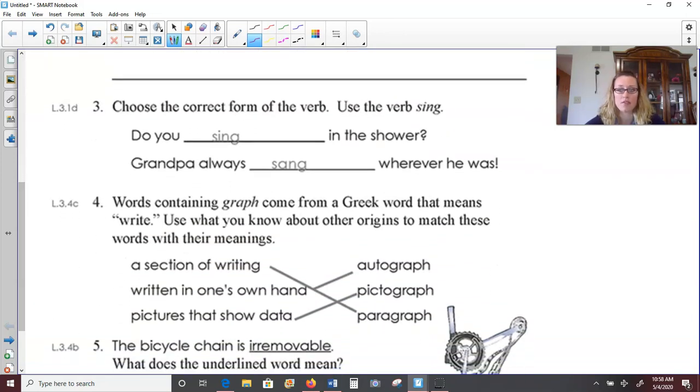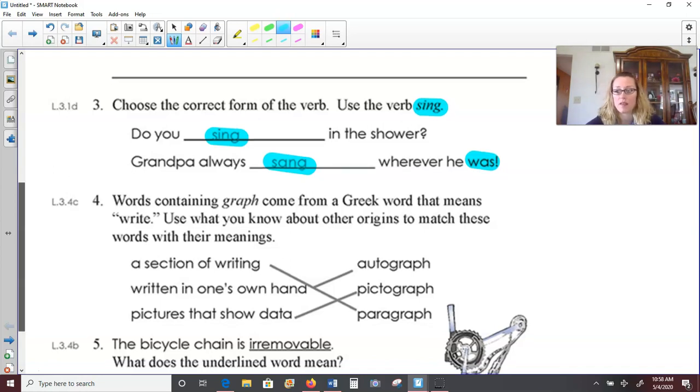Number three, choose the correct form of the verb. Use the verb sing. So this is an irregular verb. When we change it to the past tense, it goes to sang. Sing, sang, and let's see what we need here. Do you sing in the shower? Yes, I do. Grandpa always sang wherever he was. We wouldn't say grandpa always singed wherever he was. And we know that this needs to be past tense because of the verb was at the end.